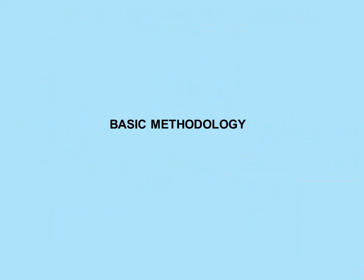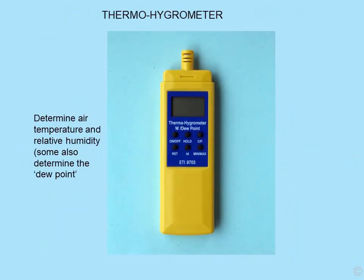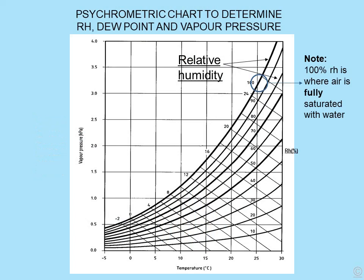So what is the basic methodology that we could use? Number one, the thermohygrometer. We use a thermohygrometer to determine air temperature and relative humidity; some of them will also determine the dew point. We can then use a psychometric chart to determine relative humidity and dew point if we've only got temperature and humidity, and from this we can also calculate the vapour pressure. If we simply take temperature and humidity and look at this psychometric chart, on the right scale is relative humidity and on the bottom is temperature.